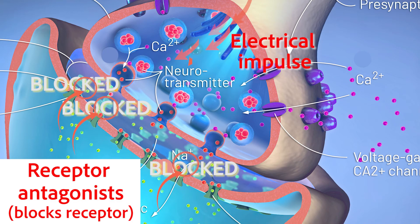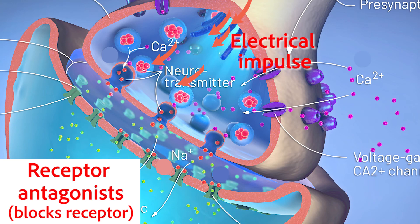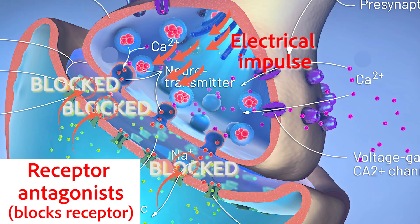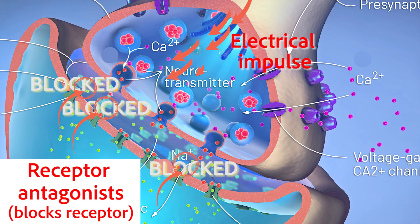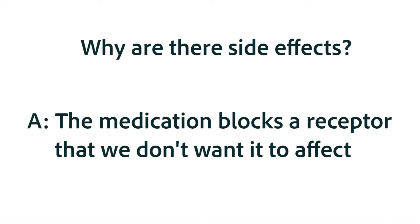Most of our anti-emetic drugs are receptor antagonists for a particular neurotransmitter. Simplistically, when we feel nauseous, our vomiting center is getting too many messages in the form of neurotransmitters, so most anti-emetics block the neurotransmitter involved. Most side effects come from the binding of that medication in an area of the body or brain that we don't want it to affect. In the next lesson, we'll cover the safety issues associated with vomiting.